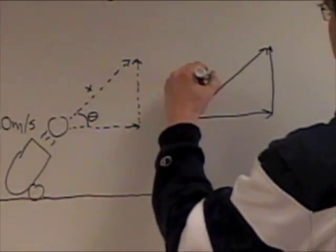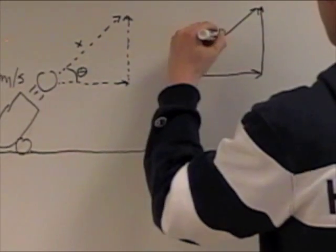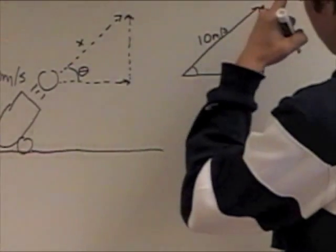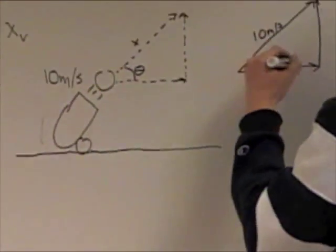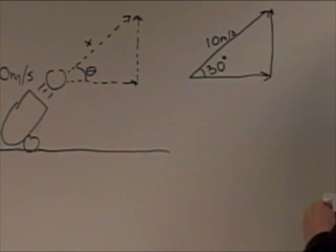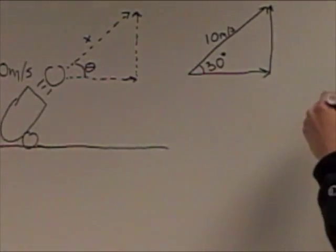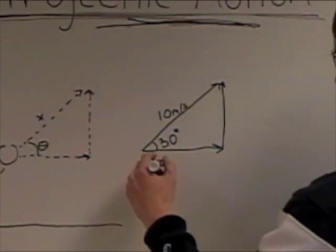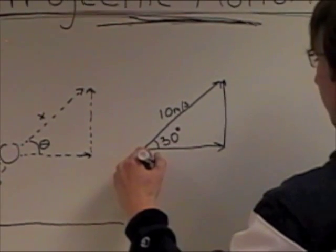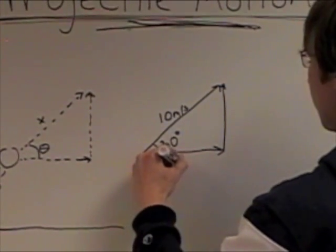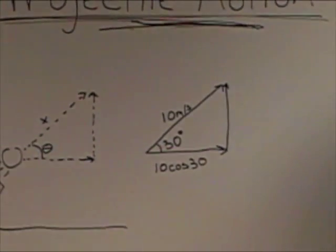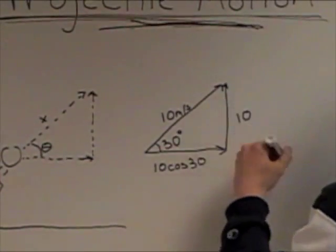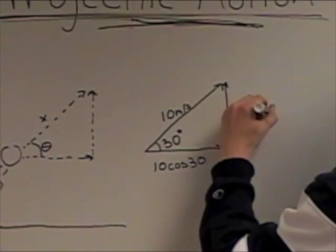So this is 10 meters per second. And let's say that theta is 30 degrees. Alright. So the horizontal component of the velocity is 10 cosine 30. And the vertical is 10 sine 30.